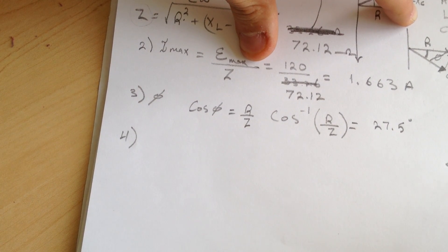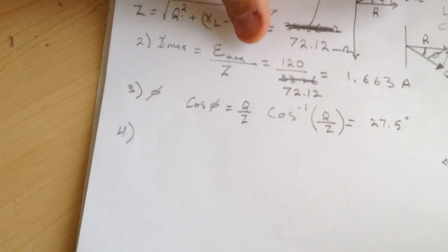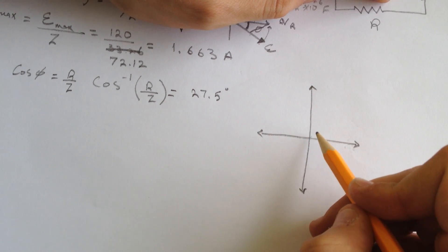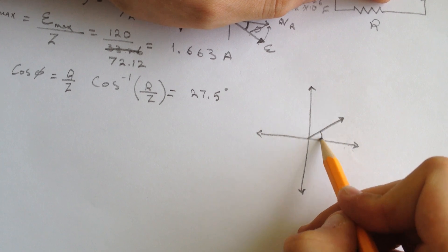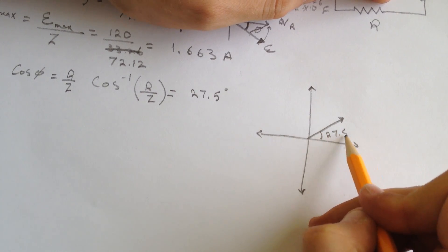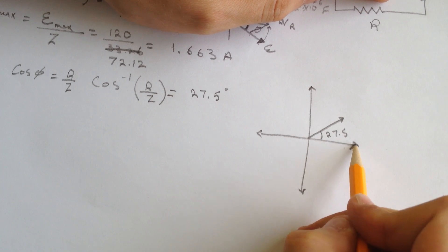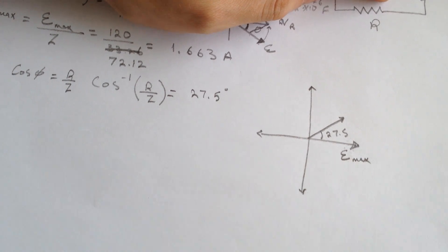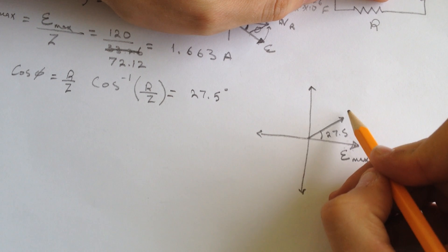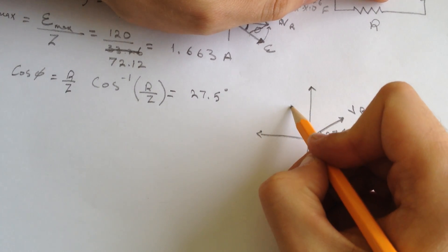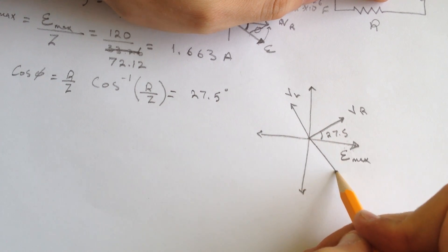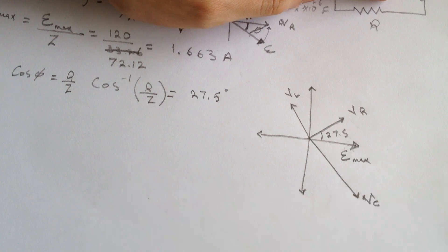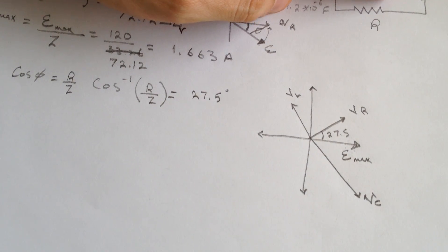So the voltage diagram, this is the voltage diagram. Now the VR is going this way and this is the 27.5. And this is the Emax and it's always perpendicular to the VR. This is the VR, the VL, and here is the VC.